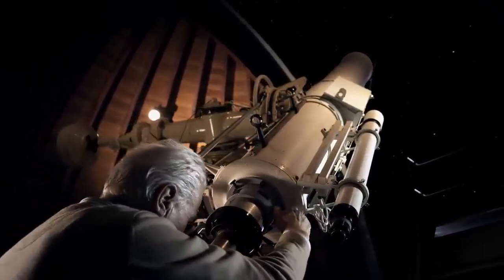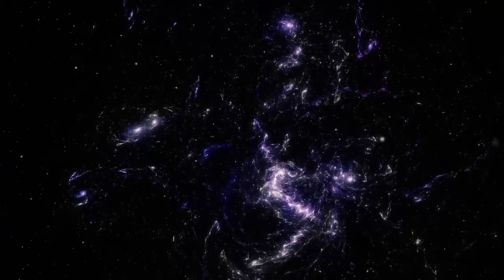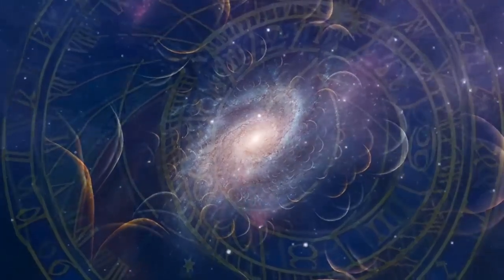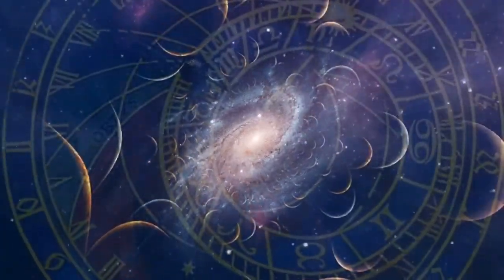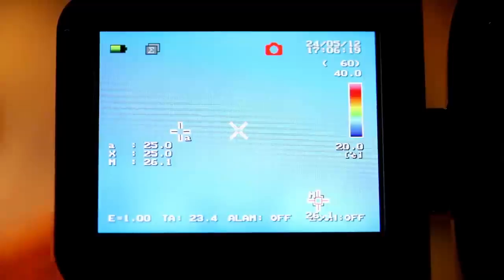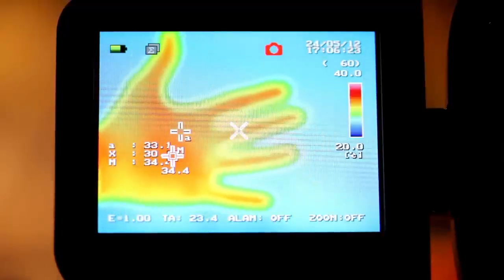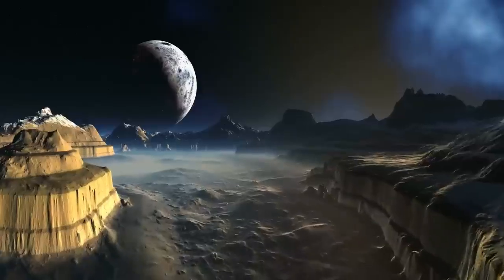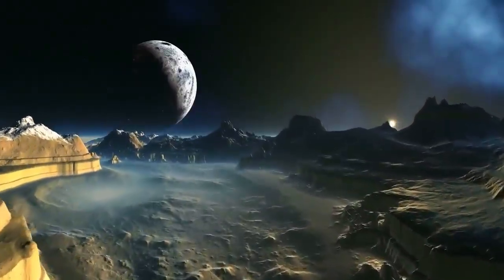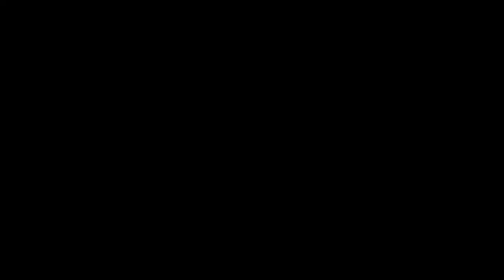However, due to the time delay in its light reaching us, researchers cannot be certain whether Betelgeuse is already in the final stages before a supernova or if it still has tens of thousands of years left in its life cycle. This paradox highlights the complexity of stellar evolution studies and reinforces the idea that when we gaze into the cosmos, we are always looking into the past.